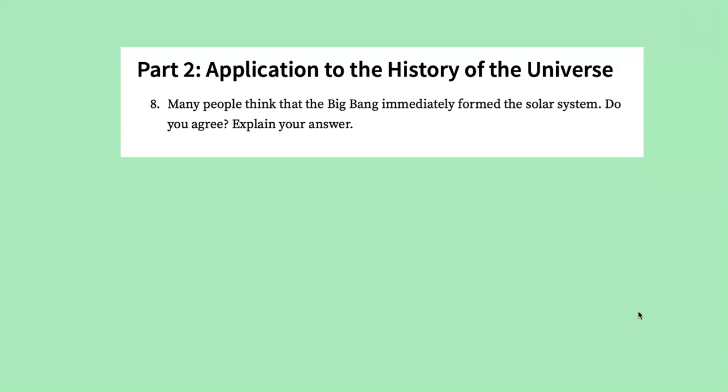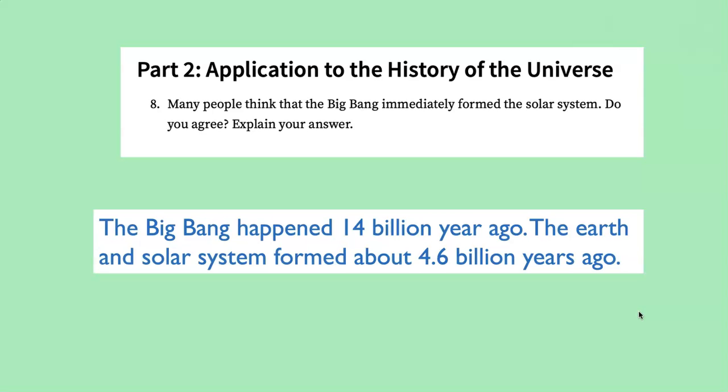Finally, the last part of this section asks you to think about the Big Bang and the solar system. And as I mentioned earlier, many people have a misconception that the Big Bang formed the solar system. Do you agree? Well, hopefully by now you realize that these events are separated by an enormous amount of time. The Big Bang happened about 14 billion years ago and the Earth and solar system formed about 4.6 billion years ago.